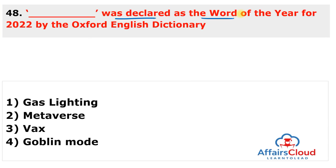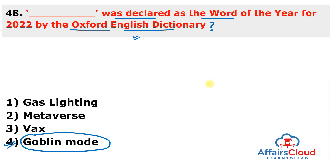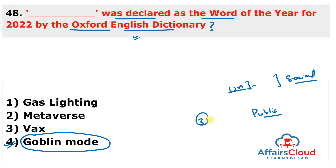Question 48: Which word was declared the Word of the Year 2022 by the Oxford English Dictionary? The answer is 'Goblin Mode' — a slang term referring to behaviour that is unapologetically self-indulgent, lazy, or greedy, typically rejecting social norms. For the first time, the Word of the Year was open to public vote — around 3 lakh English speakers voted over two weeks. Goblin Mode received 93% of votes, with Metaverse in second place.